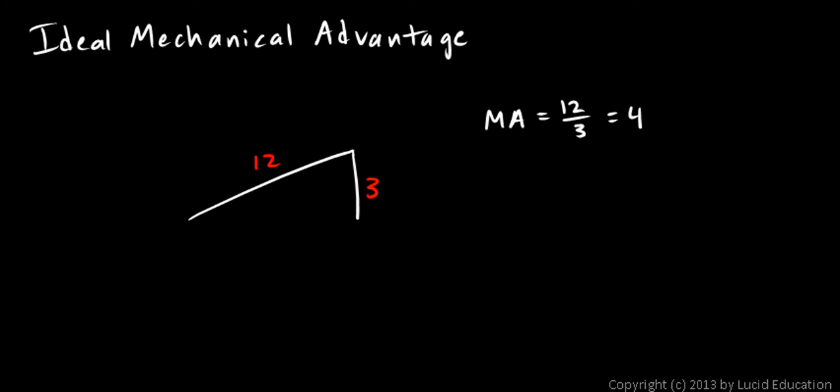If you're rolling something up a ramp on wheels, the wheels can be very effective at helping you approach what we call the ideal mechanical advantage. But there's always going to have to be a little bit of extra force, even with wheels, to overcome the friction. And if there's not wheels, it can be a much larger effort required to overcome the friction.